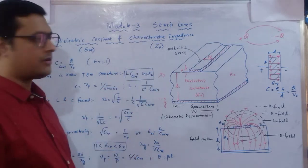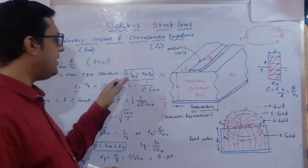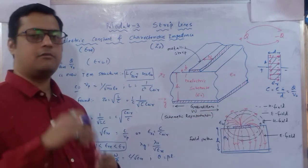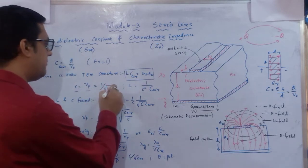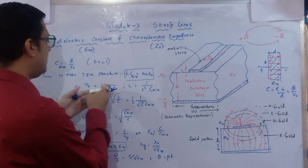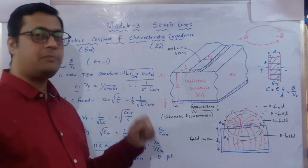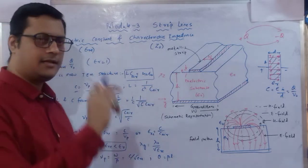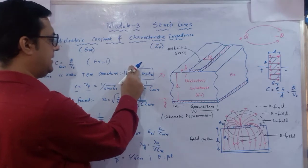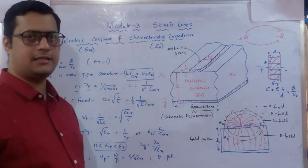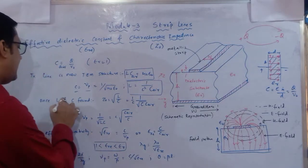The phase velocity c = 1/√(μ₀ε₀). Substituting into the LC relation, L can be represented as 1/(c² × C_air). Taking C_air to the denominator, since μ₀/ε₀ = 1/c², we get L = 1/(c² × C_air). Once L and C are found, the characteristic impedance Z₀ = √(L/C) can be determined.